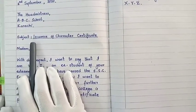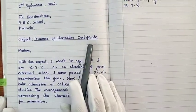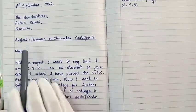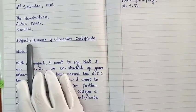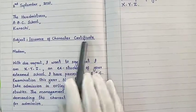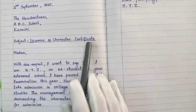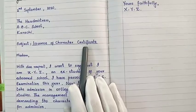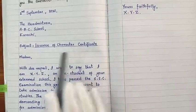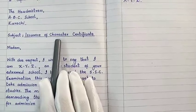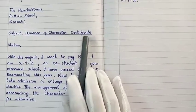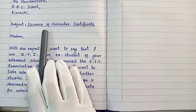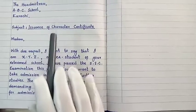In the subject line, you will write the issuance of character certificate, since you are applying for the character certificate. Write: Subject: Issuance of Character Certificate, and underline it. Note that the 'I' of Issuance, 'C' of Character, and 'C' of Certificate are in capital letters, while 'of' is in small letters because it is a preposition in the subject line.